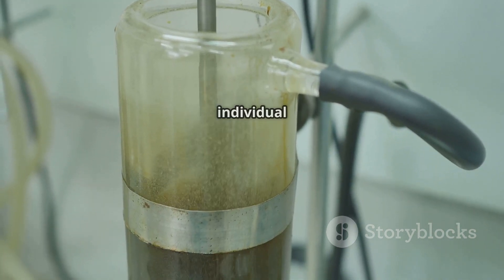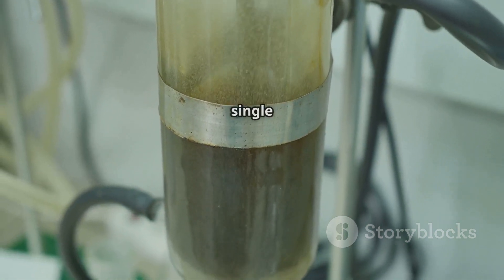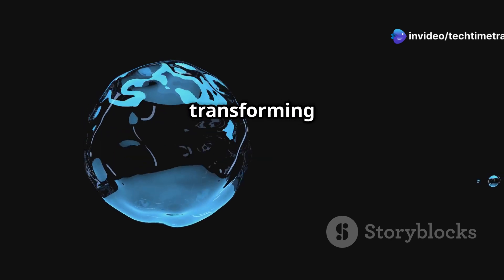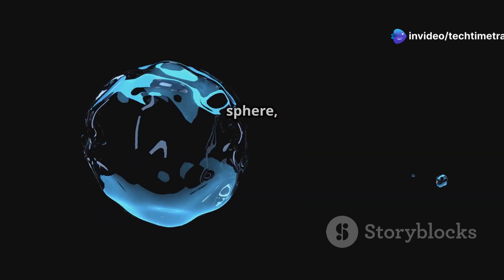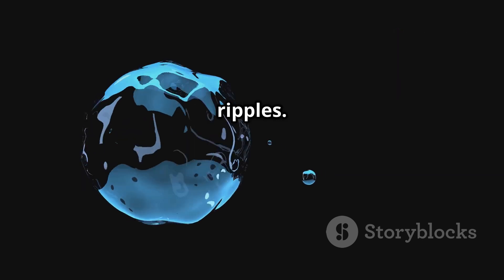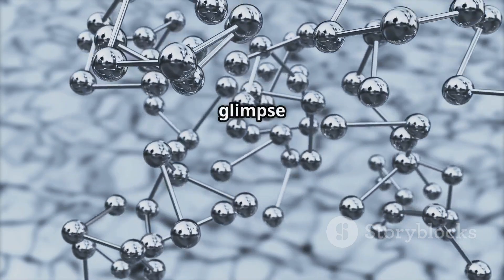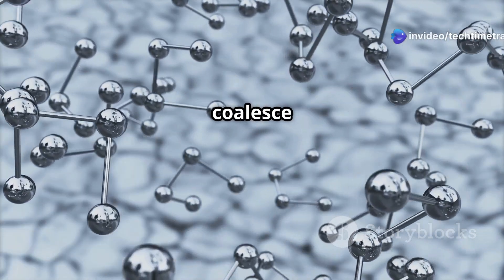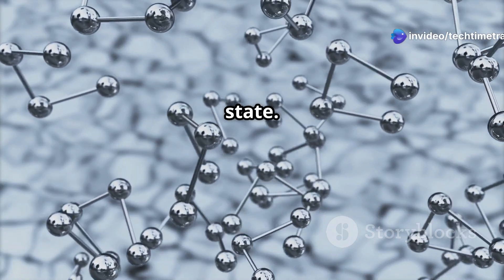Imagine a droplet of water suddenly transforming into a perfectly smooth sphere, erasing all internal boundaries and ripples. This visual analogy provides a glimpse into the strange world of BECs, where individual atoms coalesce into a collective quantum state.